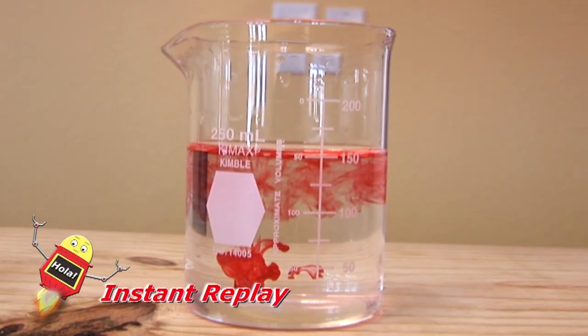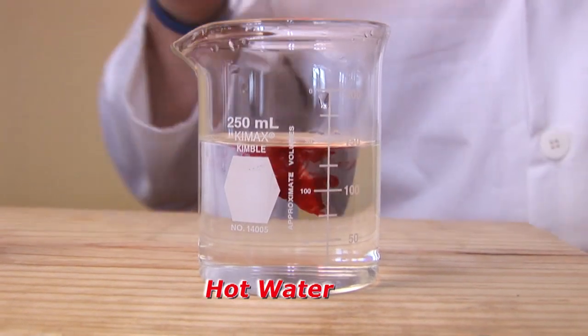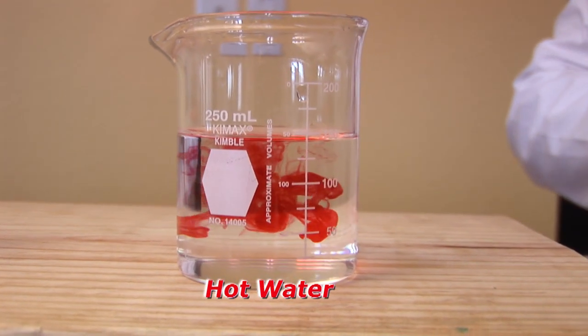Beaker 3 will hold hot water. Then we place food coloring in the cup and observe what happens.